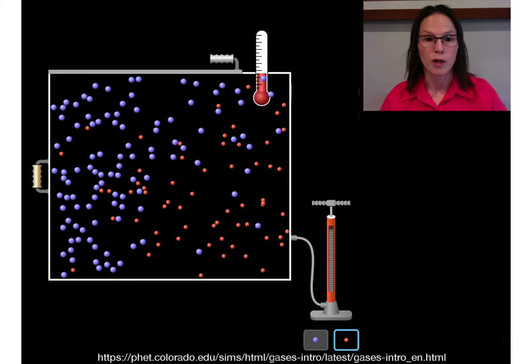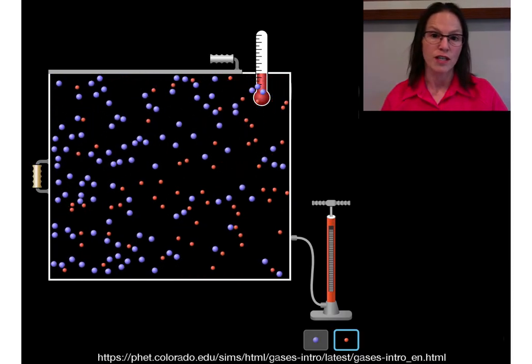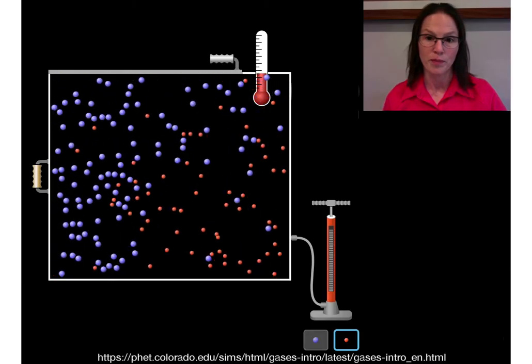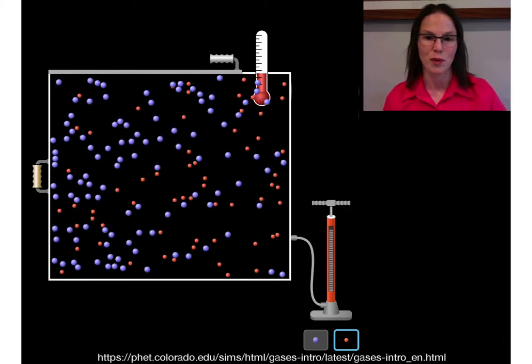Our reaction starts when a random collision between species occurs with the appropriate orientation and sufficient energy for bonds to break and form. Those starting species are called reactants or starting materials. Sometimes there's just one.